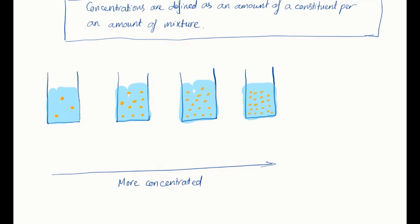So the first one has 3 sugar molecules in 1 liter of solution, so the concentration is 3 per liter. The next one has 10 sugar molecules in 1 liter of solution, so the concentration is 10 per liter.